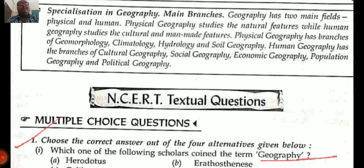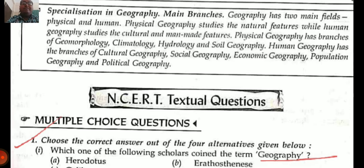Today my main intention is to discuss the NCERT textual question solutions with you, along with one or two extra questions that usually come in examinations. What are the specializations in geography? Geography has two important branches: physical and human. Physical geography studies the natural features, whereas human geography studies the cultural and man-made features.